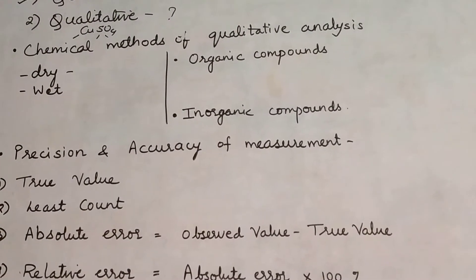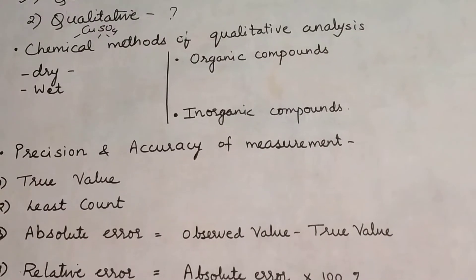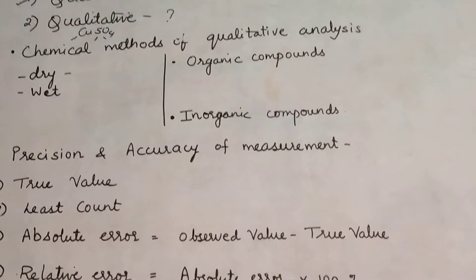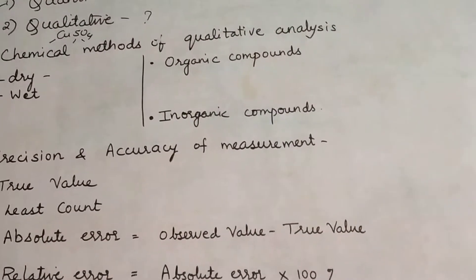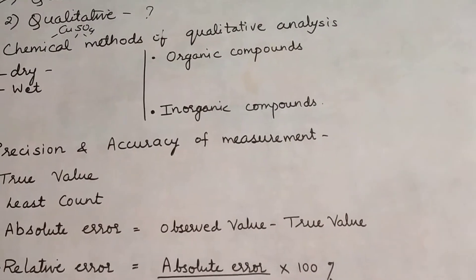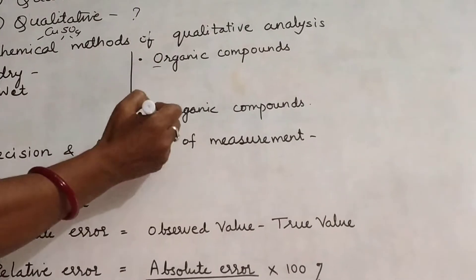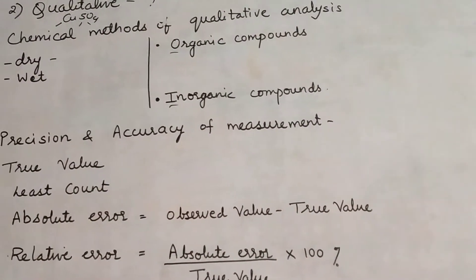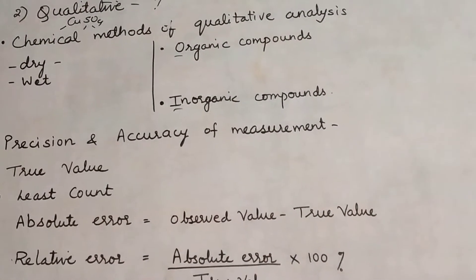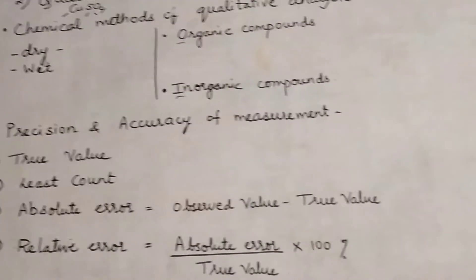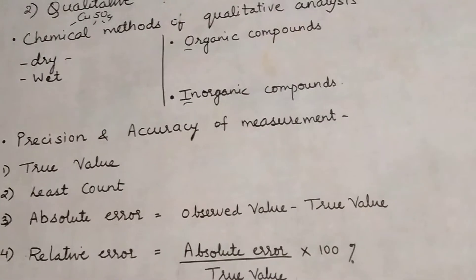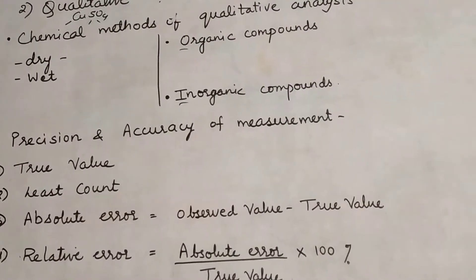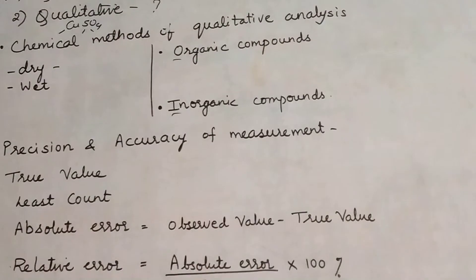Chemical methods of qualitative analysis can be done for two types of compounds: organic compounds and inorganic compounds. At this time in chemistry, you're just being introduced to the subject, so you may not have knowledge yet about what organic chemistry is and what inorganic chemistry is.